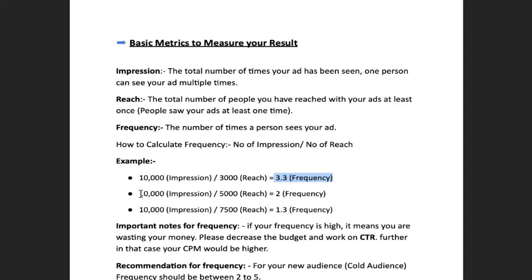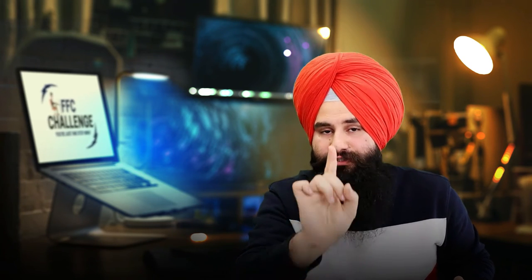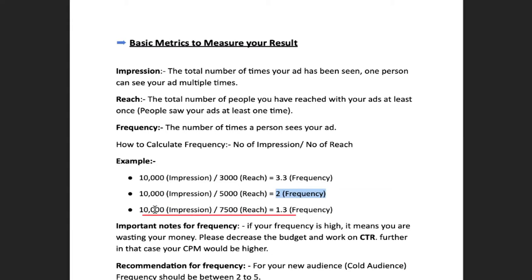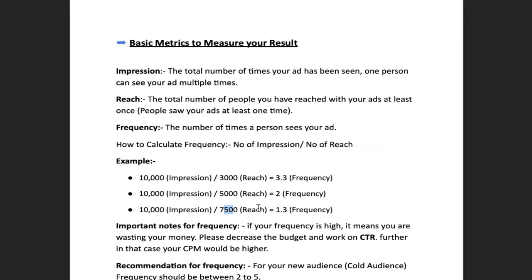That means a single person sees your ad about 3 to 4 times a day. In a second example, 10,000 impressions with 5,000 reach gives a frequency of 2, meaning each person sees your ad twice a day. In the third example, 10,000 impressions divided by 7,500 reach gives 1.3 frequency. Notice: lower frequency means you're covering more people, and covering more people is good for your ads.